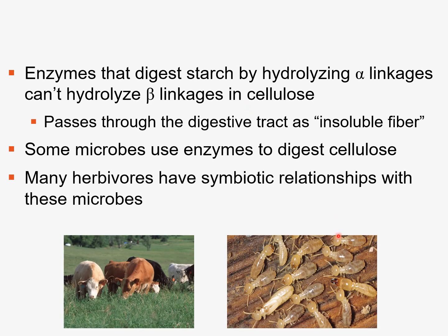These are some examples: cows and termites. Many herbivores have these types of symbiotic relationships — it's a symbiotic relationship between the cow and the microbes living in the gut. They depend on each other.